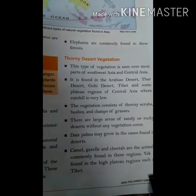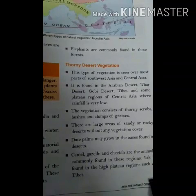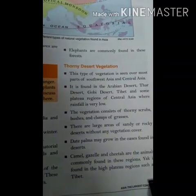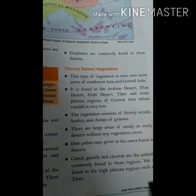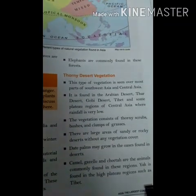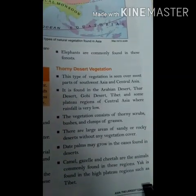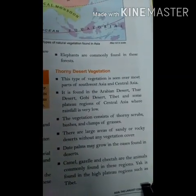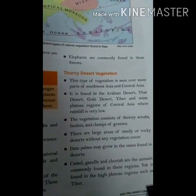Thorny desert vegetation is found in the Arabian Desert, Thar Desert, and some plateaus of Central Asia where rainfall is very low. The animals commonly found in this region are camels. This type of vegetation is seen in parts of Southwest Asia and Central Asia.